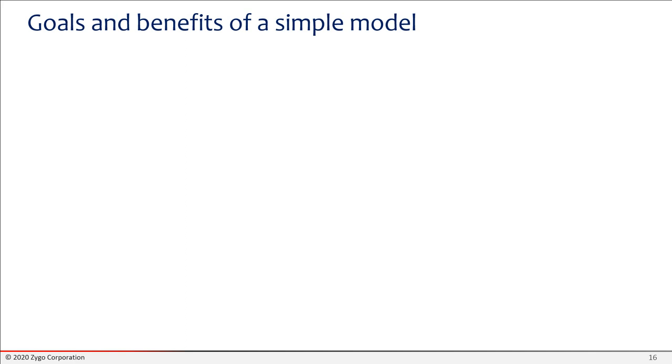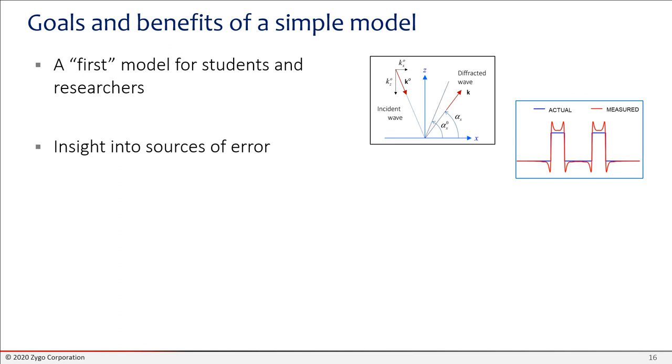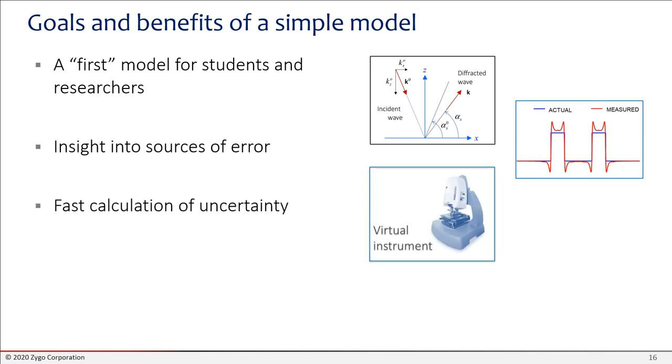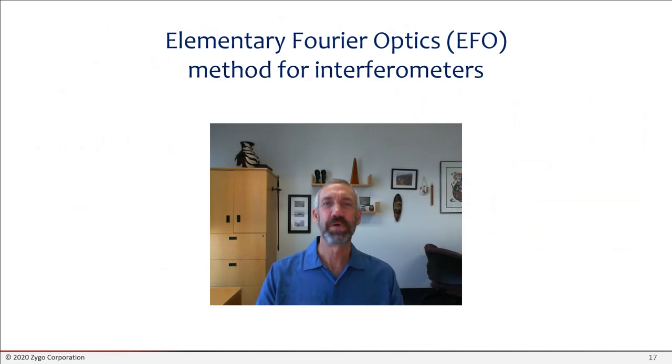The goals for a simple model are quite modest. We're looking for a first model for students and researchers, something to get started. We'd also like to gain some insight into the more fundamental sources of error, the things that we see all the time, so that we can avoid these error sources in designing our experiment. We'd like to be able to do fast calculations of uncertainty with a model that is not so computationally intensive so that we can do lots and lots of calculations fairly quickly, for example, for this virtual instrument. And then finally, if you've done your job of rigorously solving Maxwell's equations, it's always good to compare the results to a very simple model to see where such an advanced model provides added value.